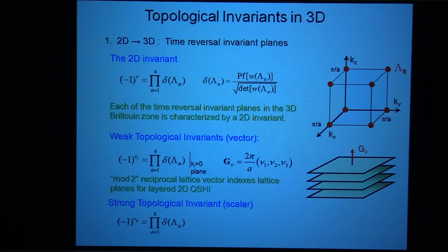And so in particular, the strong Z2 invariant is what happens if you have the plane at K equals zero is not equal to the plane at K equals pi. And then, if that's the case, you can show that that is true for all three of these pairs. And so that's what this strong Z2 invariant is.